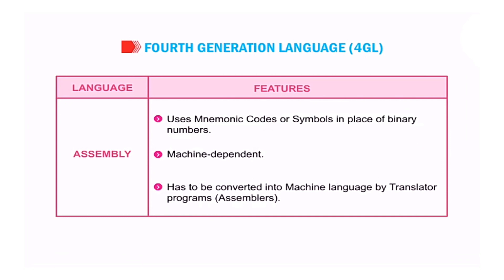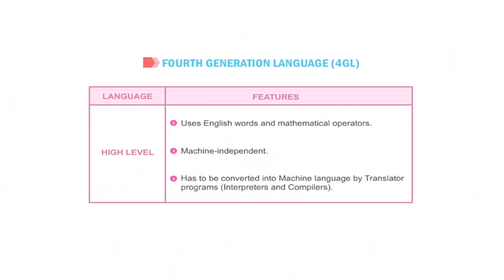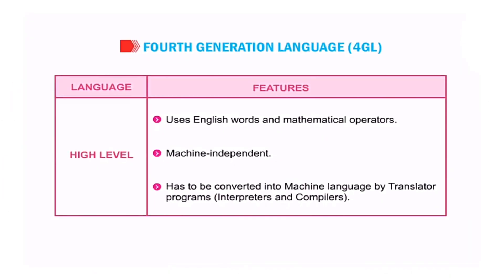Assembly language uses mnemonic codes or symbols in place of binary numbers. It is machine dependent and has to be converted into machine language by translator programs such as interpreters and compilers. High-level language uses English words and mathematical operators. It is machine independent and also has to be converted into machine language by translator programs such as interpreters and compilers.